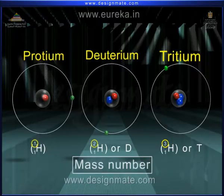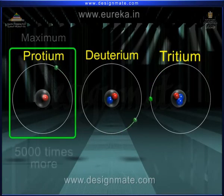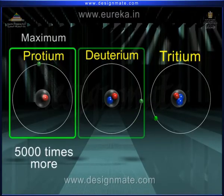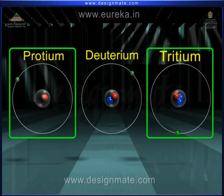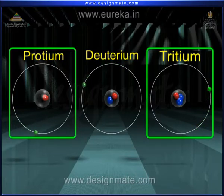In nature, among all three isotopes, the amount of protium is maximum. Its atoms are 5,000 times more than deuterium atoms. The amount of tritium atoms is extremely small. It is believed that the relative amount of tritium atoms present in the naturally occurring hydrogen atoms is in the ratio of 10 raised to 17 is to 1.